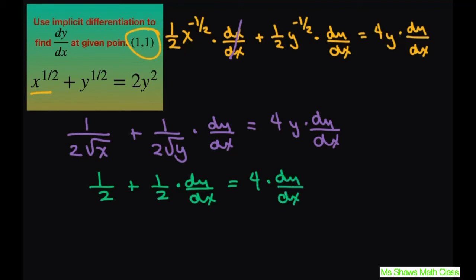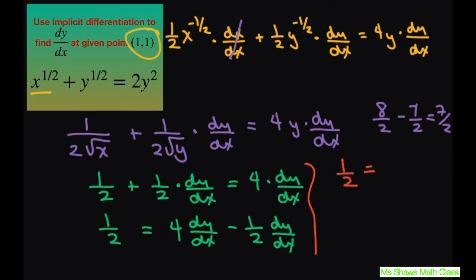So we're going to get 1 half equals 4 dy dx minus 1 half dy dx. Alright, so 4 minus 1 half. That's going to be, let's just write this as 8 halves minus 1 half. That gives you 7 halves. So now we have 1 half. This is just my 4 there. So I have 7 halves dy dx.